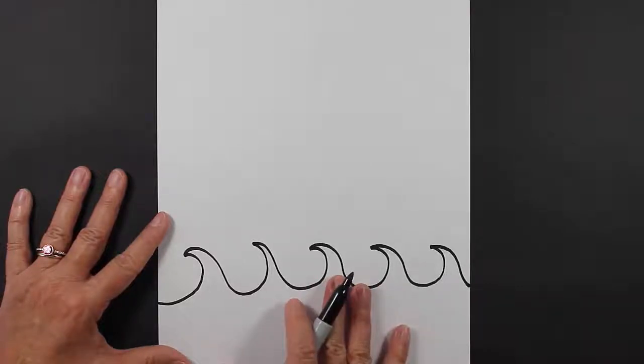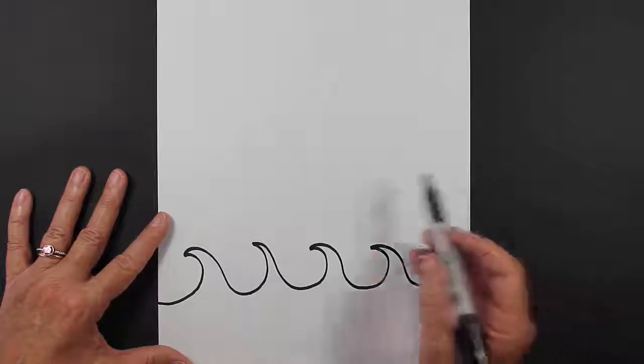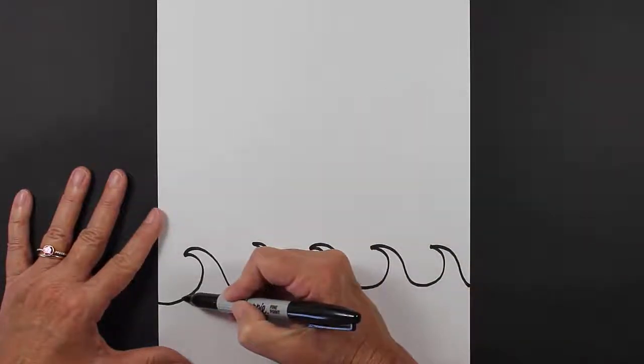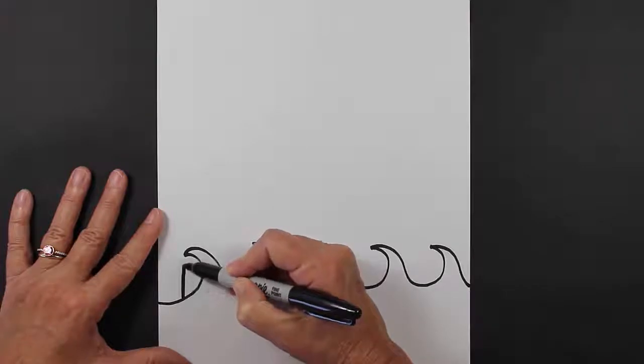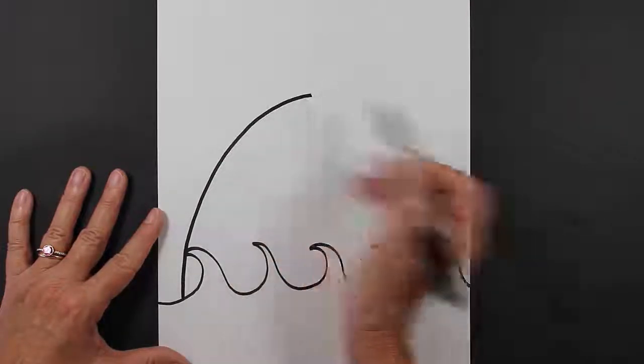Now we're going to make a shark coming up out of the waves, and basically I'm going to make two curved lines for my shark. So I'm going to start here, I'm going to come up, and then I'm going to stop.